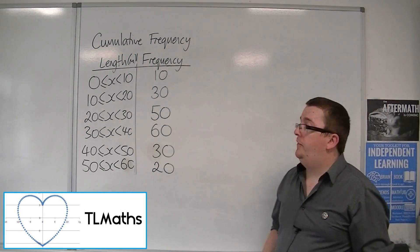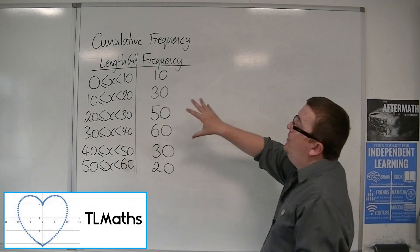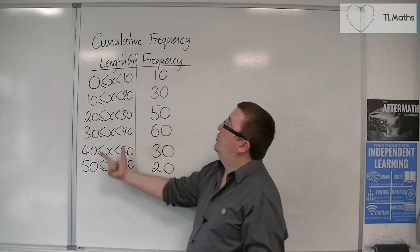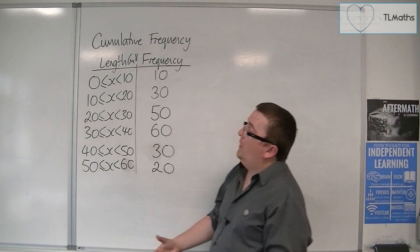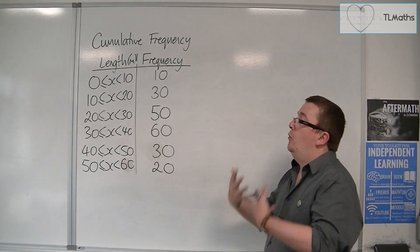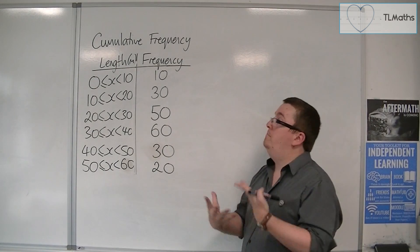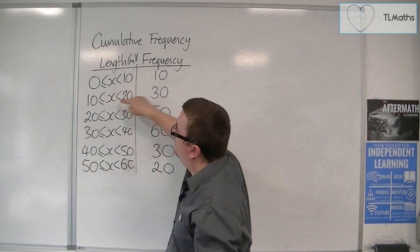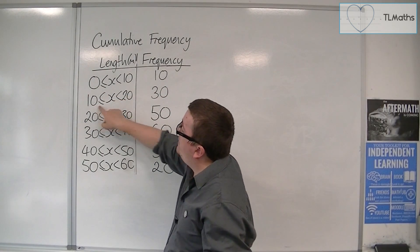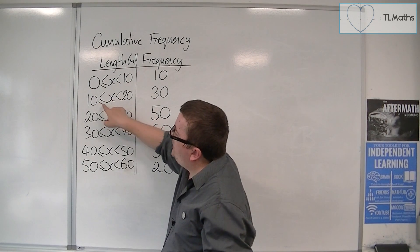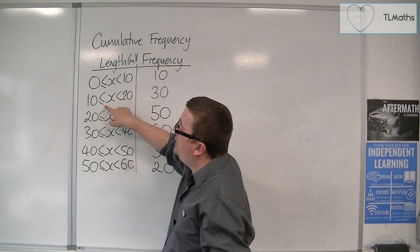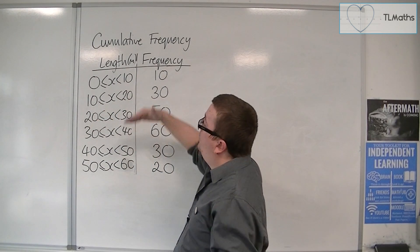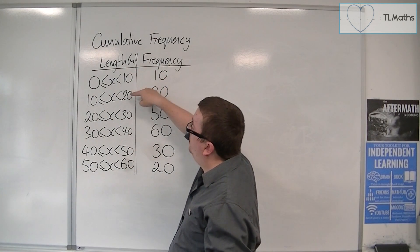So let's look at cumulative frequency. Here is a grouped frequency table in the sense that we have groups of lengths. So if I had a length that was equal to 10 meters, it would go into this group here, because we have 10 to 20 and we have this equal sign, this inequality with the equal sign directed at the 10. So you wouldn't put 10 meters into this group, you would put it into this one.